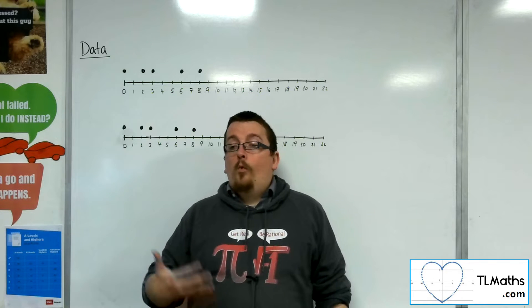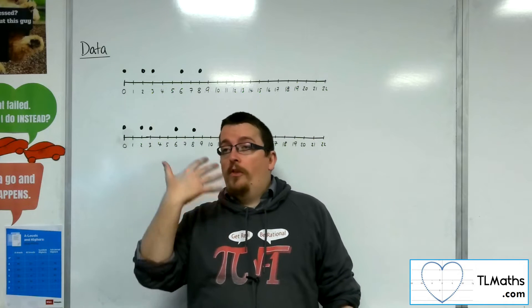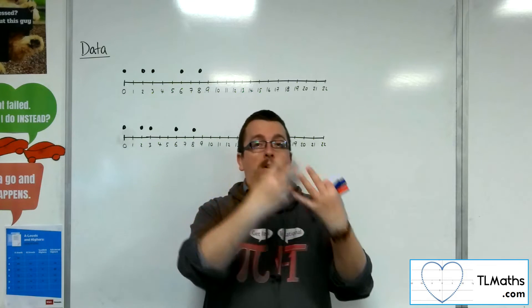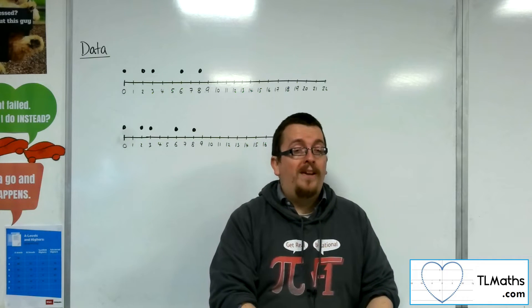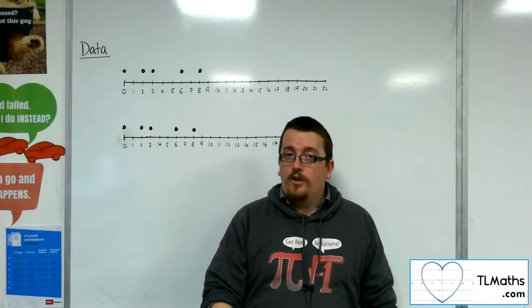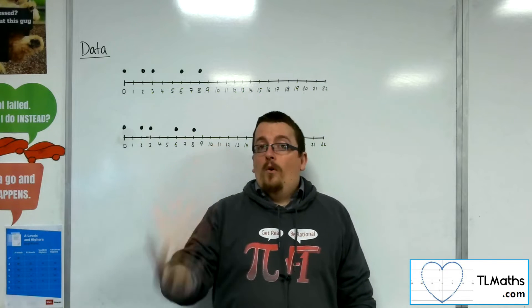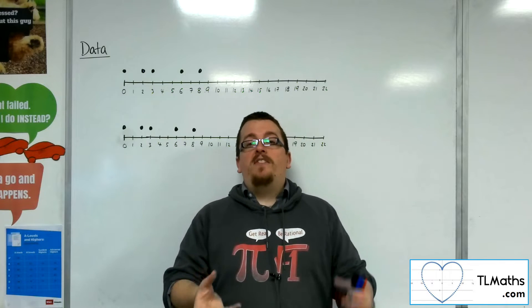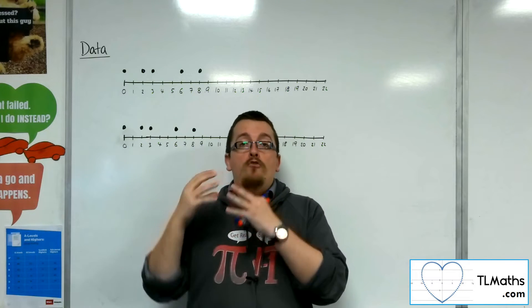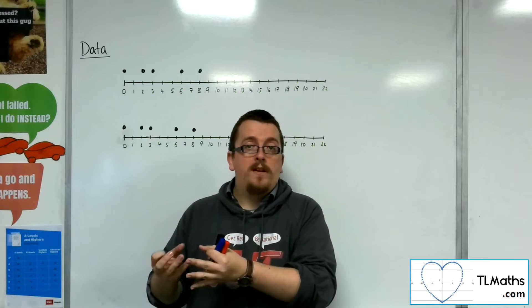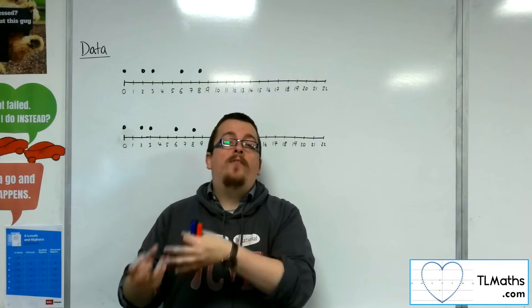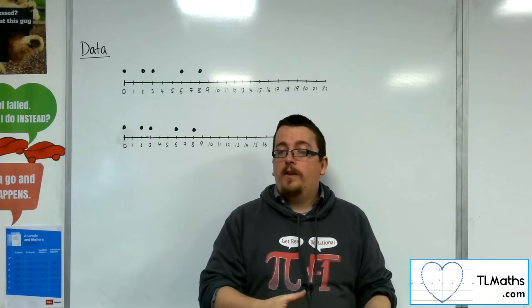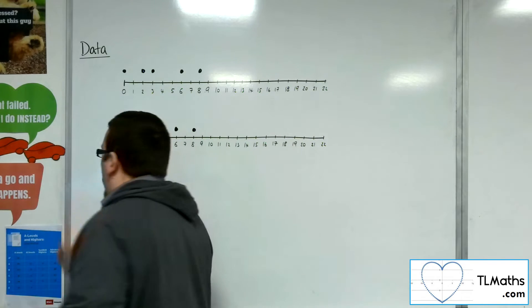So one option would be to change all the thousands of data items into degrees Fahrenheit first, and then calculate the new mean and standard deviation. Or however, is there a way that I could take the mean and the standard deviation from the original set of data in degrees centigrade, and then get the mean and standard deviation in degrees Fahrenheit from that? So that's what we're talking about here.